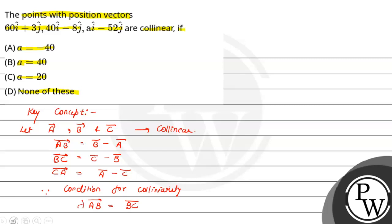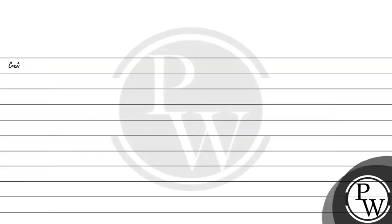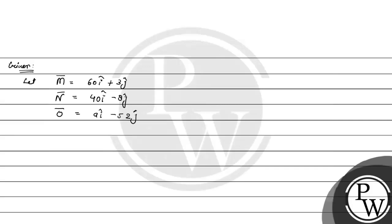Now in the question we have given some vectors. Let us name this first vector M. So vector M is 60i + 3j. There is another vector, which we call vector N, so vector N is 40i - 8j. And what is our third vector? We call it vector O, which is ai - 52j. Here we have to find out the value of a.